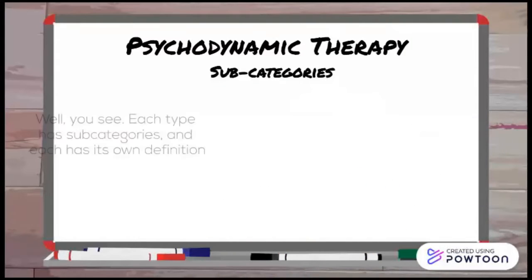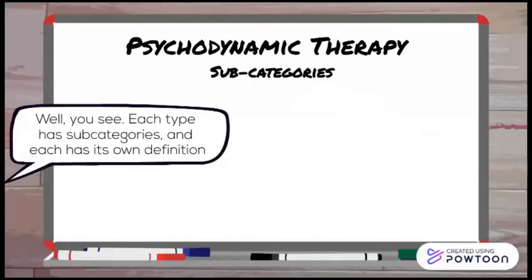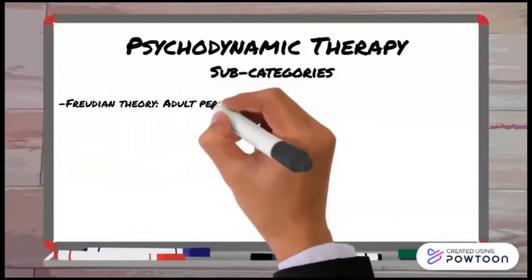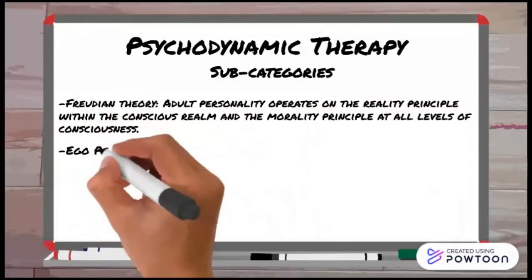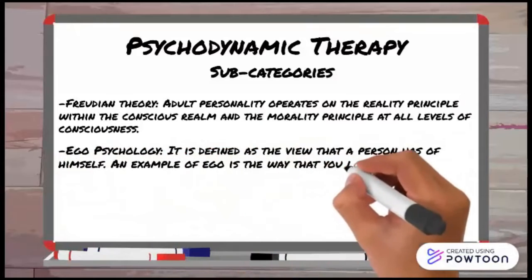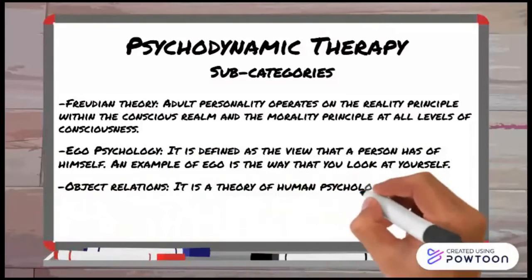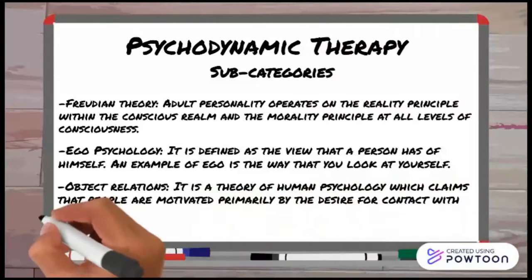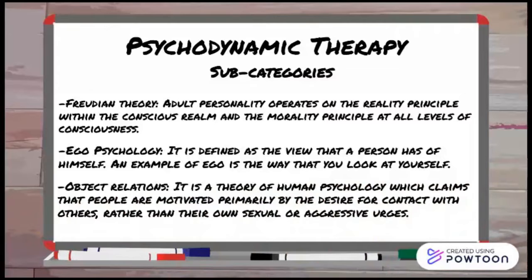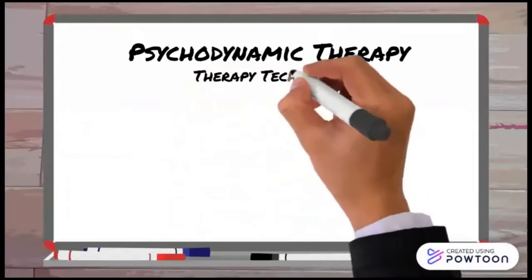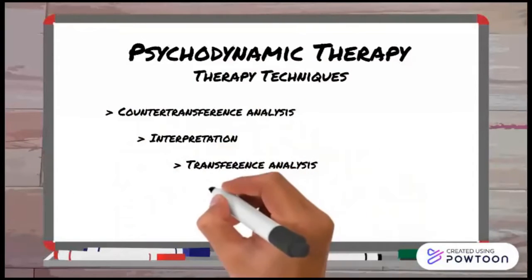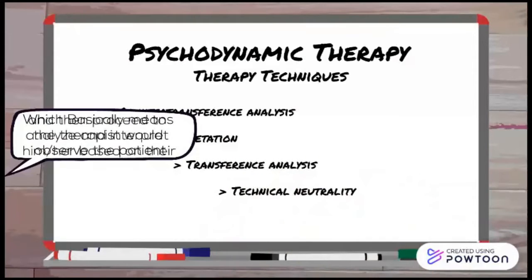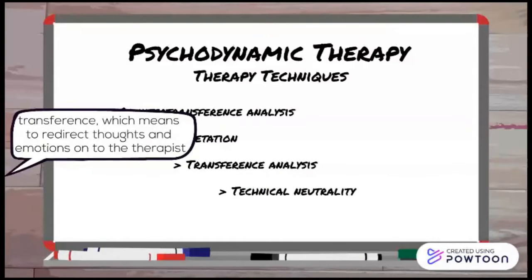What do these subcategories mean? Well, each type has subcategories and each has its own definition. Freudian theory: adult personality operates on the reality principle within the conscious realm and the morality principle at all levels of consciousness. Ego psychology is defined as the view that a person has of himself. Object relations is a theory of human psychology that claims people are motivated primarily by the desire for contact with others, rather than their own sexual or aggressive urges. The techniques include counter-transference analysis, interpretation, transference analysis, and technical neutrality — meaning the therapist observes and analyzes the patient. Transference means to redirect thoughts and emotions onto the therapist.